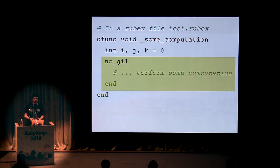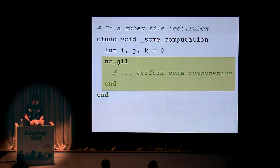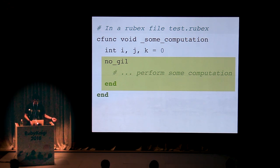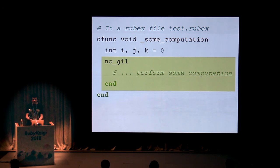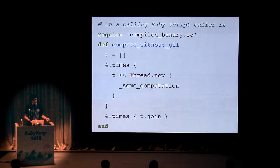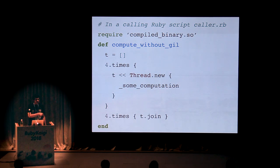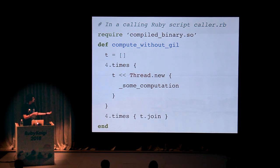This is a small example of releasing the GIL using the no_gil block. The only thing you do is provide a block called no_gil, similar to begin or rescue in Ruby, and whatever code you write inside this block will be run after releasing the GIL. Rubex will insert code that releases the GIL, runs your code, and gets the GIL back so you can do this safely. Once you write a method called some_computation which uses the no_gil block, you can simply call this method using Ruby threads. Since it's inside the thread block, it will release the GIL, call that function inside a CPU thread, and then you will get the results back in Ruby.